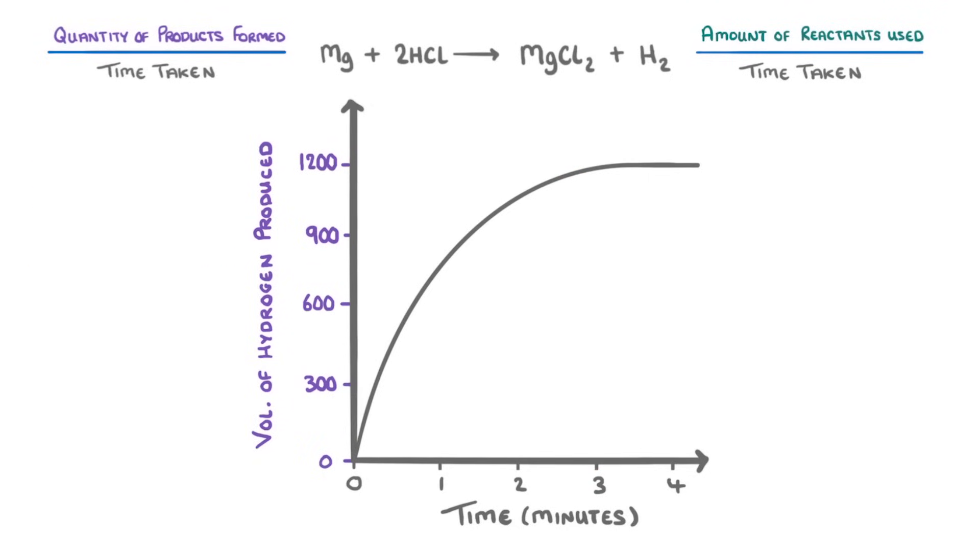The other thing you could be asked though, is to calculate the actual rate at a particular time. For example, what is the rate of reaction at 2 minutes? To do this, we need to calculate the gradient of the curve at that particular point.